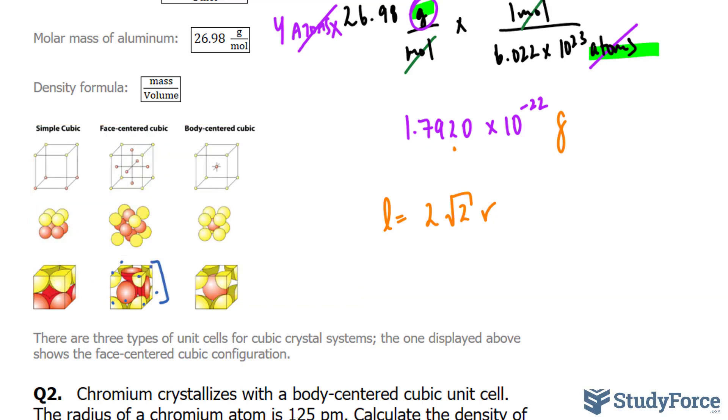I'll change 143 picometers into meters. And the conversion ratio is 1 picometer is equal to 10 to the power of negative 12 meters. So with that being said, we have 143 picometers multiply 2, 1 picometer at the bottom, and 10 to the power of negative 12 meters at the top.